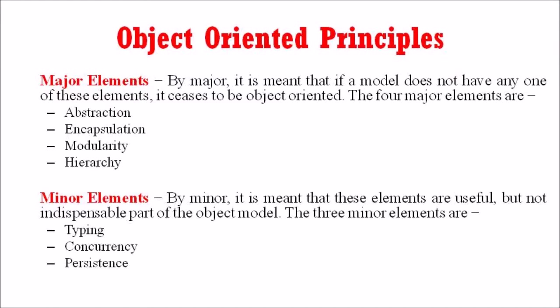The conceptual framework of an object-oriented system is based upon the object model. There are two categories of elements in an object-oriented system: the major elements as well as the minor elements. By major, it is meant that if a model does not have any one of these elements, it ceases to be object-oriented. The four major elements are abstraction, encapsulation, modularity, and hierarchy.